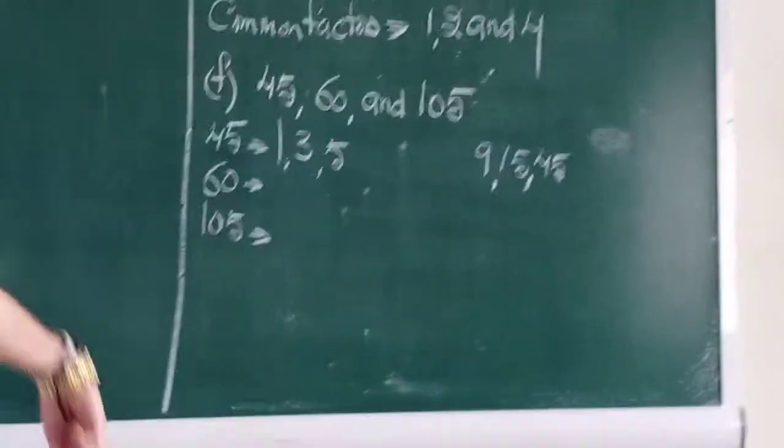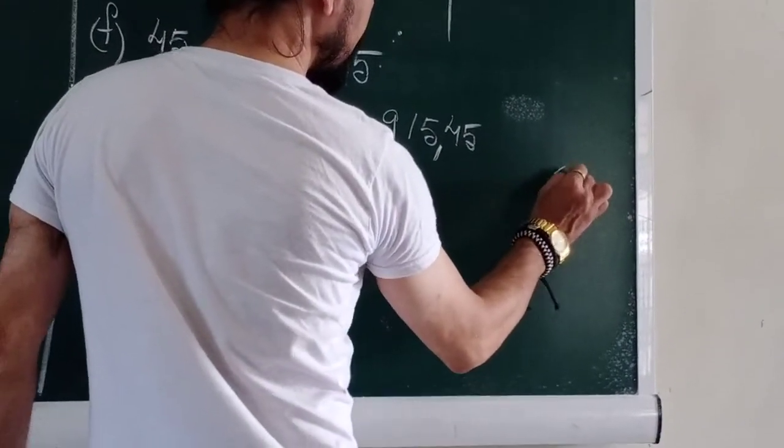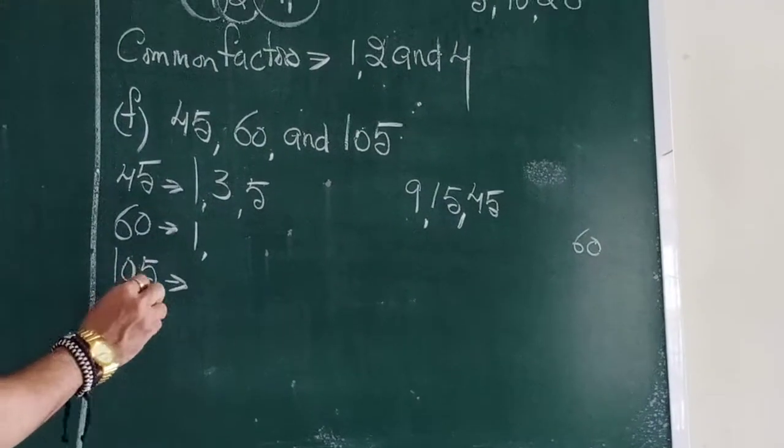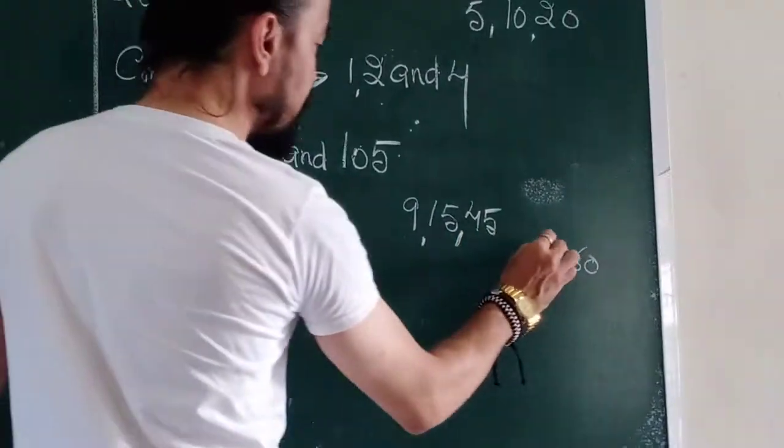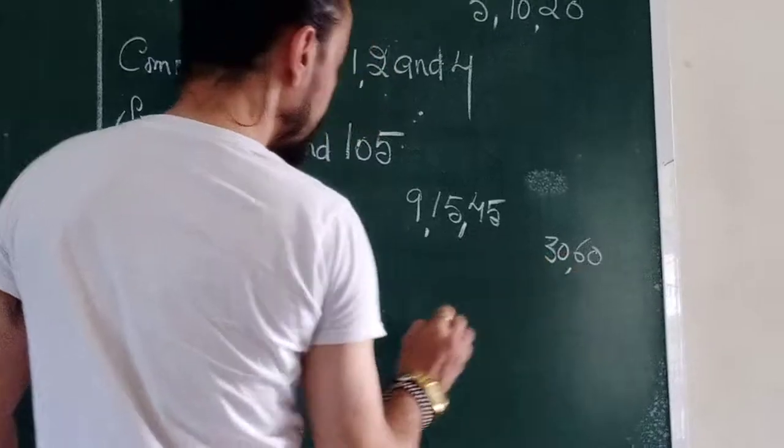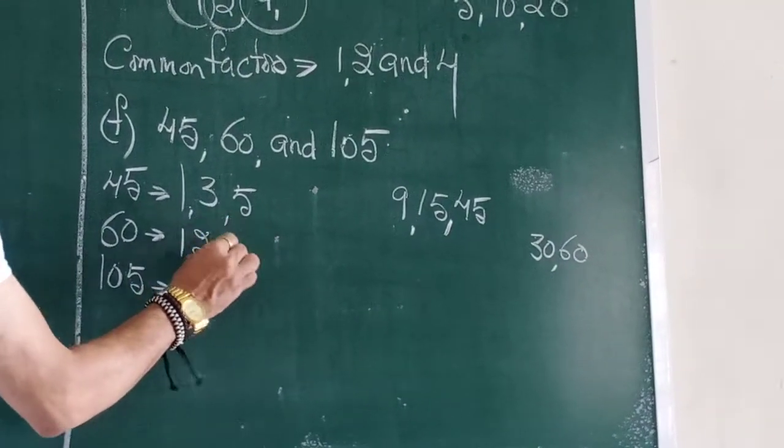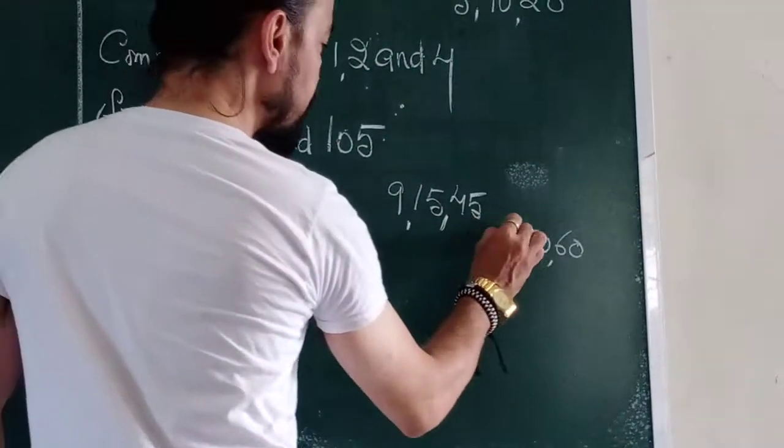The next number is 60. 1, 60 is up. 2 goes in 60? Yes. 2, 30 is up. 3 goes in 60? Yes. 3, 20 is up.